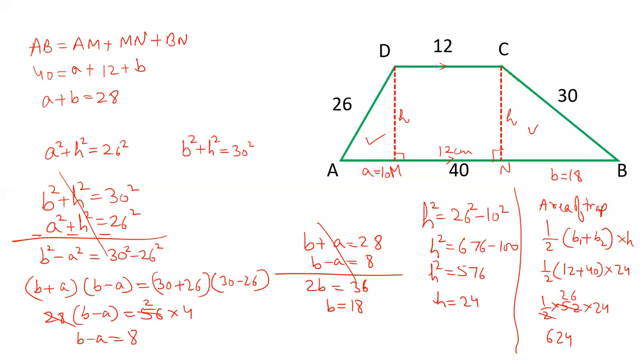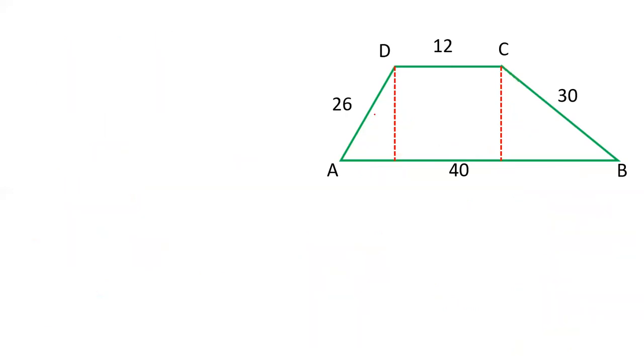Now I will give you a shortcut for this. If you can observe the numbers, instead of solving all this you can directly get the values. Let's see how we can get the value directly. This value is 12, so this is 12 surely. This is A and this is B. Now this number is 26. 26 is double of 13 and there is a Pythagoras triplet 5, 12, and 13.